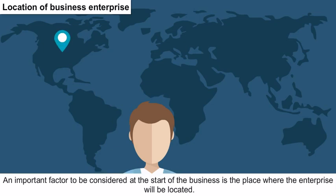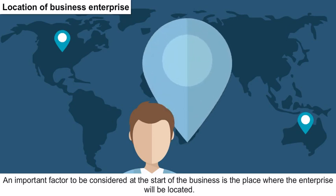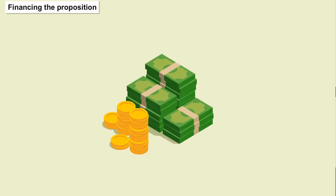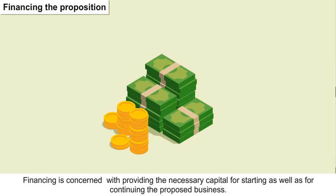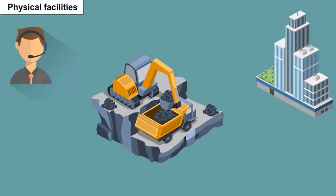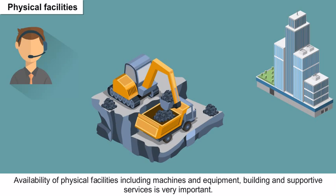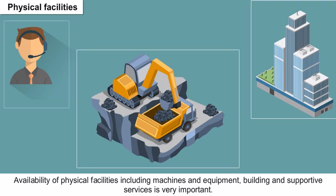Location of business enterprise: an important factor to be considered at the start of the business is the place where the enterprise will be located. Financing the proposition: financing is concerned with providing the necessary capital for starting as well as continuing the proposed business. Physical facilities: availability of physical facilities including machines and equipment, building and supportive services is very important.